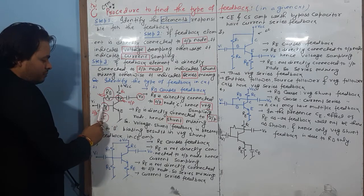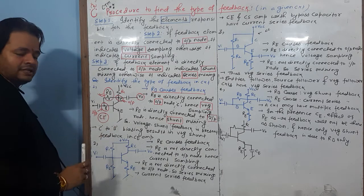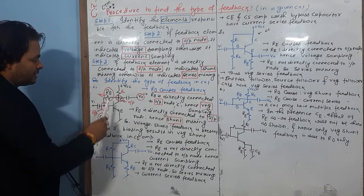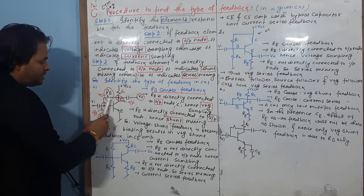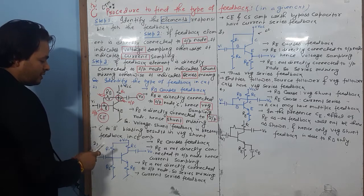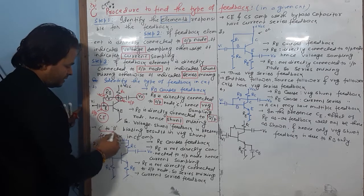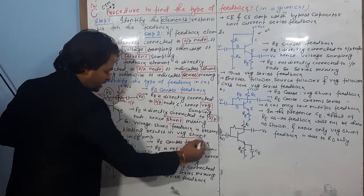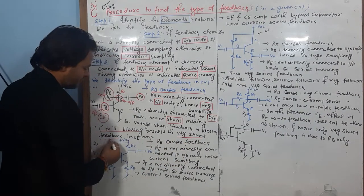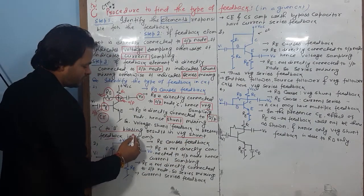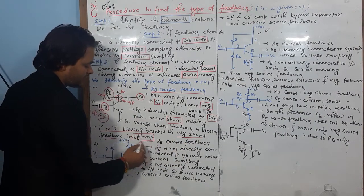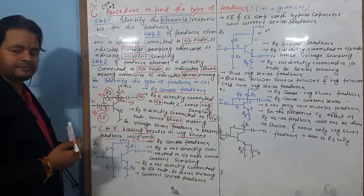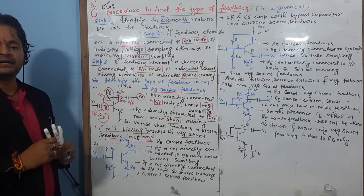Collector-to-base biasing results in voltage shunt feedback in a common emitter amplifier. In a common emitter amplifier, the output is from the collector C, the input is from the base B, and the emitter E is common to both.